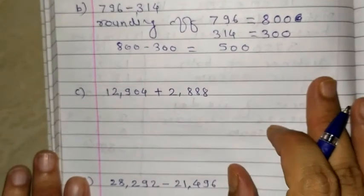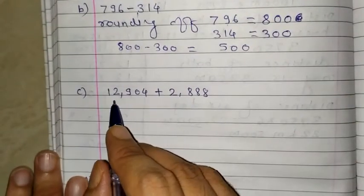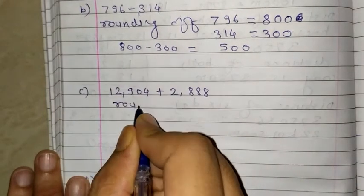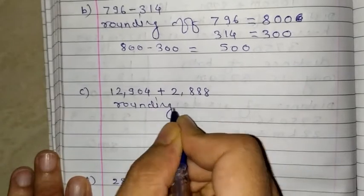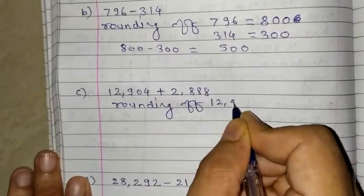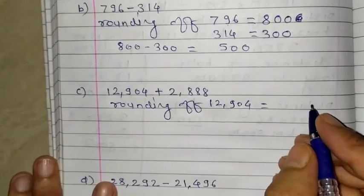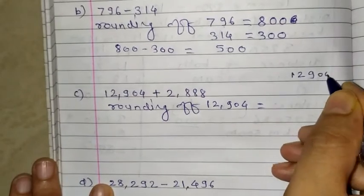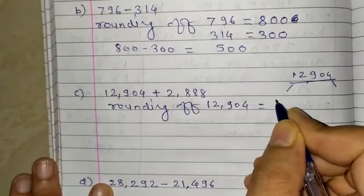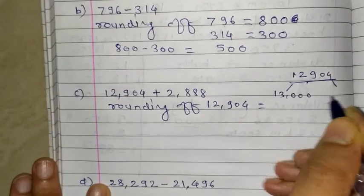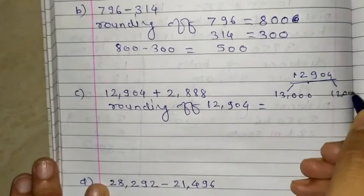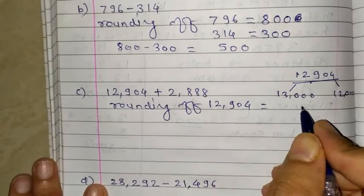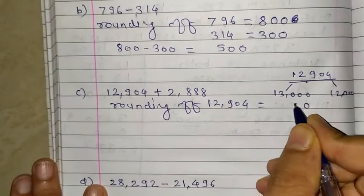Now the third one. We see here 5 digit number, so we convert to the nearest 1000. Rounding of 12,904, this number is in between two numbers, 13,000 and 12,000. But if you see it is 12,904, so it is more closer to 13,000.